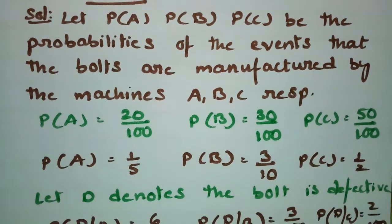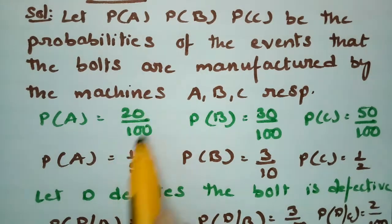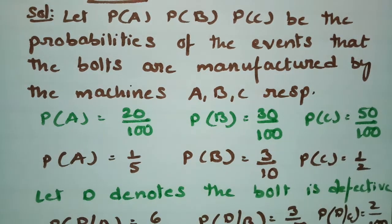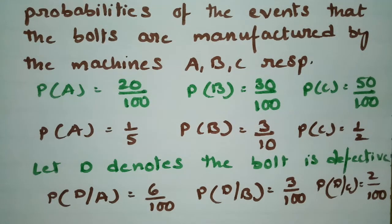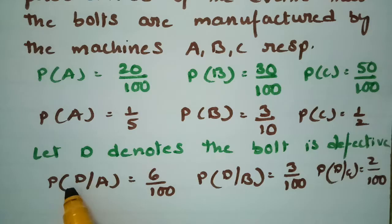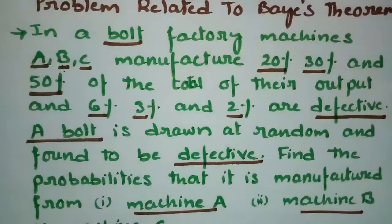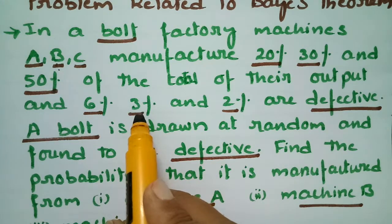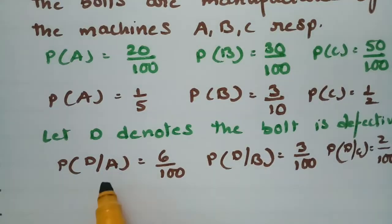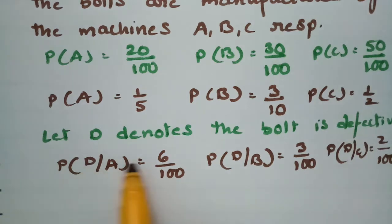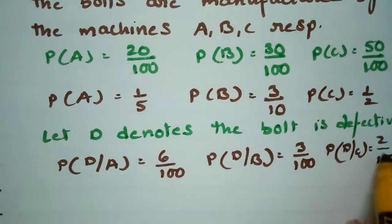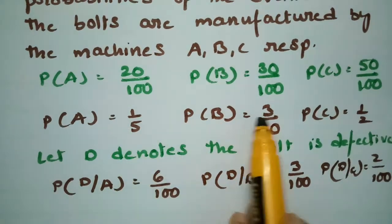Next we talk about the defective bolts. Let D denote that a bolt is defective. Machine A produces 6% defective bolts, so P(D|A) = 6/100. Machine B produces 3% defective bolts, so P(D|B) = 3/100. Machine C produces 2% defective bolts, so P(D|C) = 2/100. All six values are now ready.